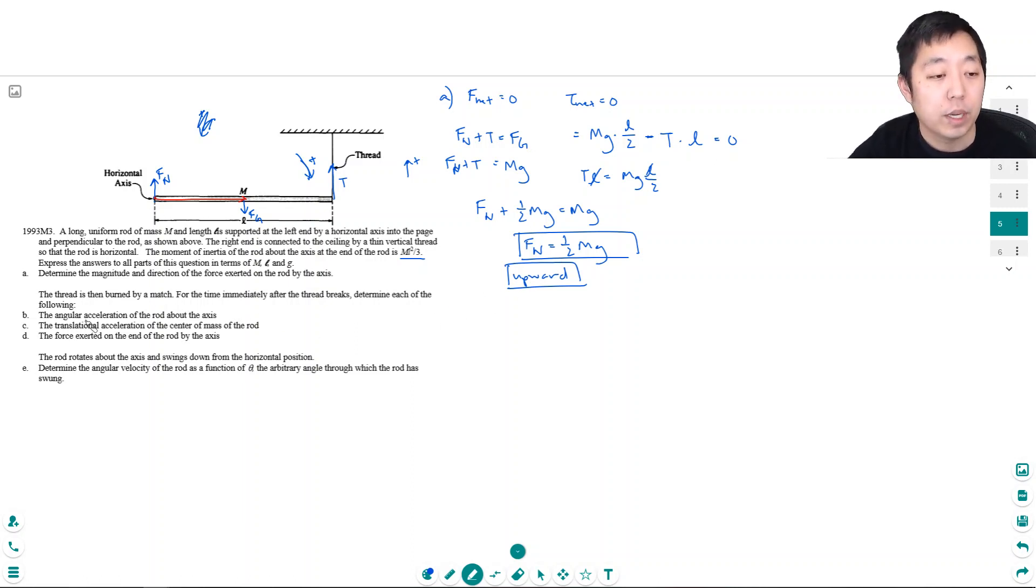Okay, the thread is then burned by a match. For the time immediately after the thread breaks, determine the angular acceleration of the rod about the axis. So as soon as I cut it, what is the angular acceleration? Well, the net torque in this case would just be this part, mgl over 2, that's equal to I times alpha. I, they told you, was ml squared over 3 times alpha. So alpha, let's see, the m's cancel, one of the l's cancel, so it's equal to 3 halves g over l.